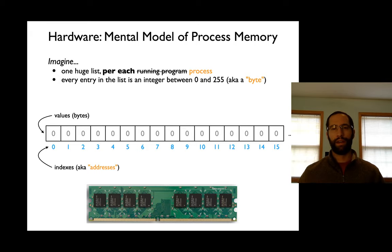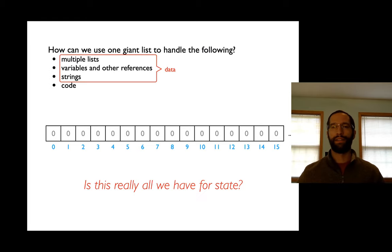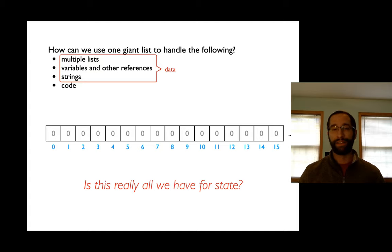You should be a little suspicious, because you've written programs with more than that — maybe two lists, or numbers bigger than 255. So there's a tension: if I have this simple one big list with only small integers, how can I do all the other things programs can do? How can I have multiple lists, multiple variables referencing the same object, strings instead of just numbers? And the real mind-bender is that the code for our program itself also has to end up in that list.